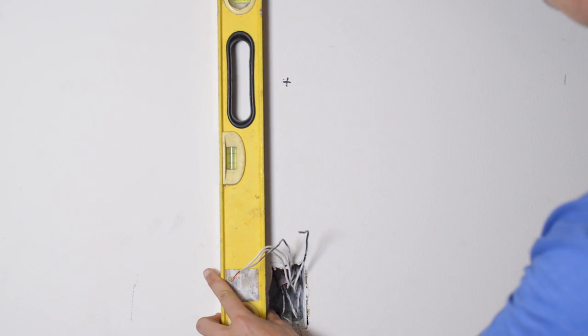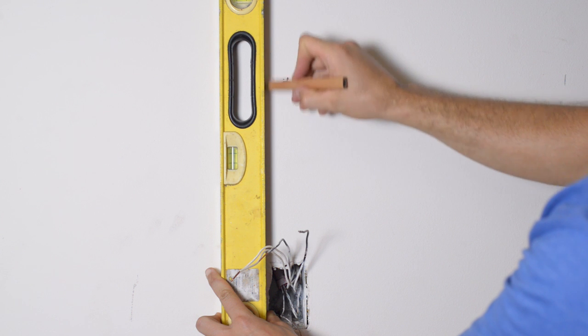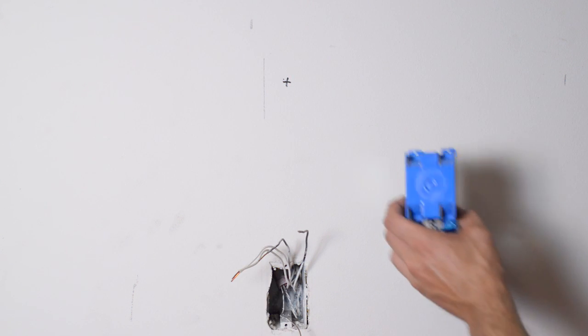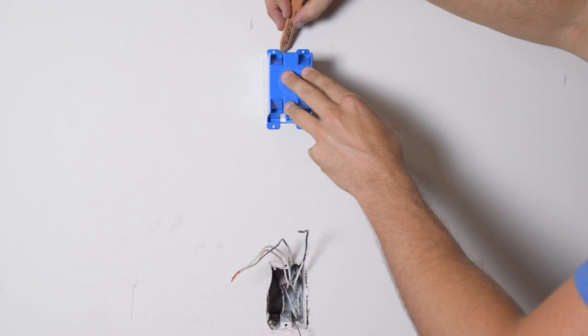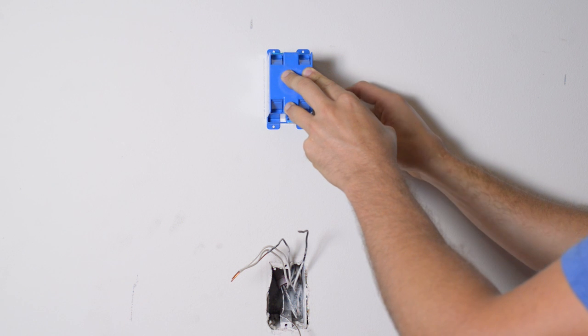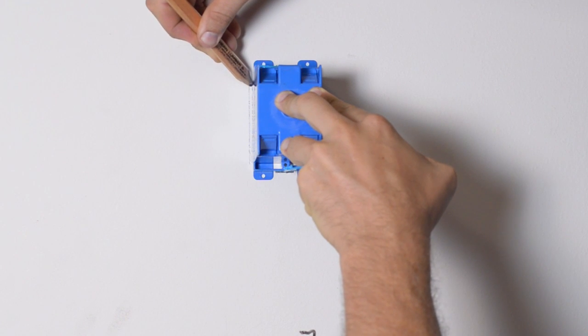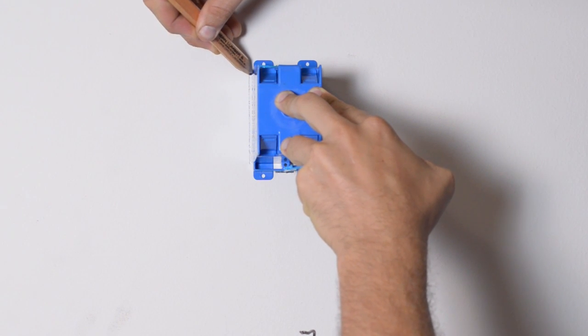So now I'm going to just use my level to get a better reference of where the stud is and make a mark. And then I'm going to trace around the outlet box so I know where to cut the hole. And you can see I'm a little off that line I drew there just to make sure I don't hit the stud.